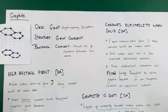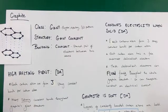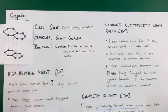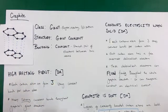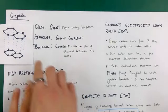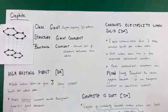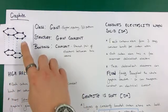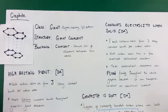This is a revision video focused on the structure of graphite. Here's a picture of the structure. You can see the key aspects: it has three strong covalent bonds per carbon atom, it's composed of layers of carbon atoms, and between those layers there are only weak forces of attraction.